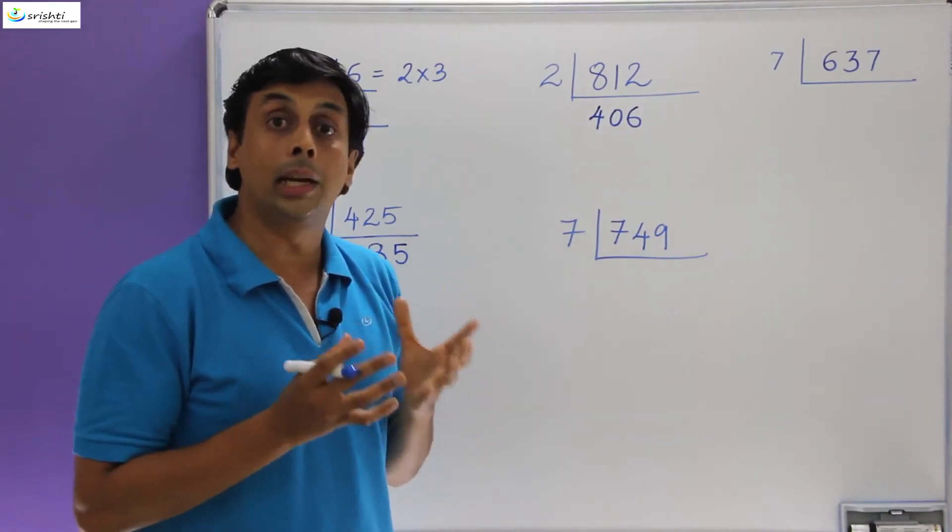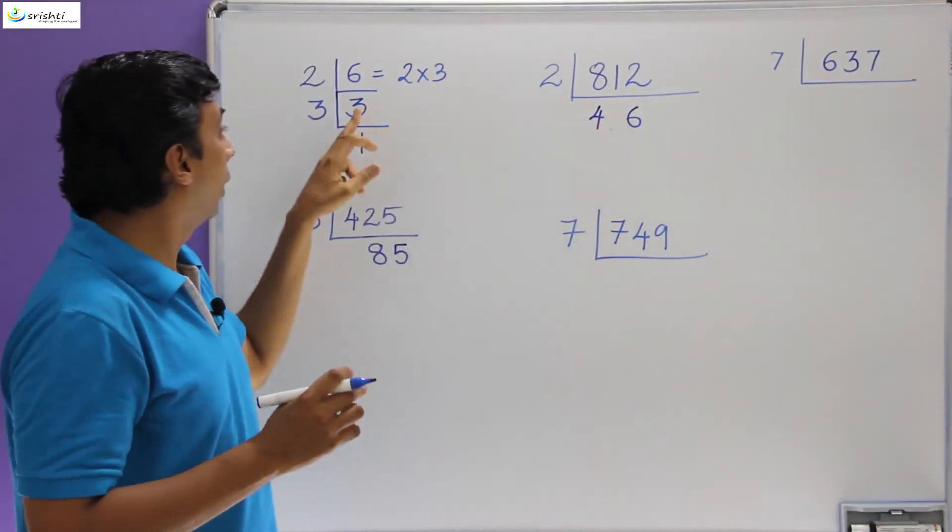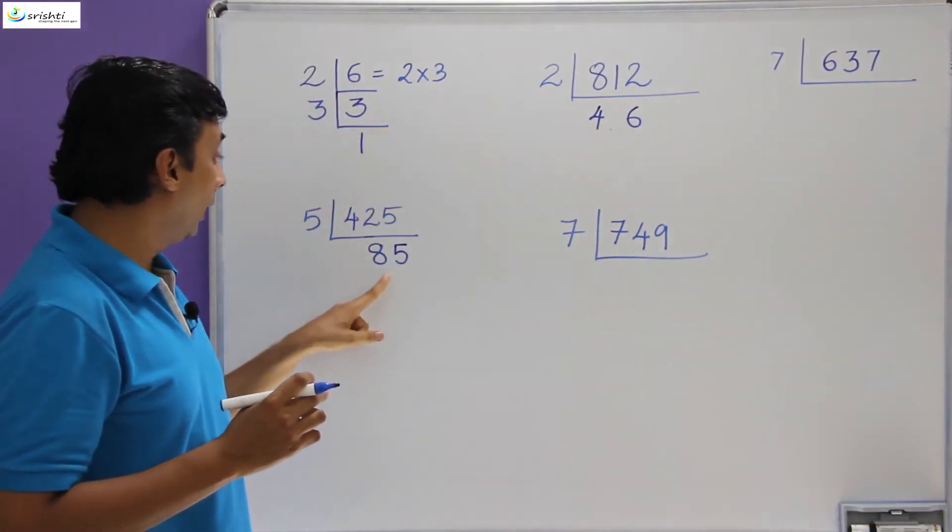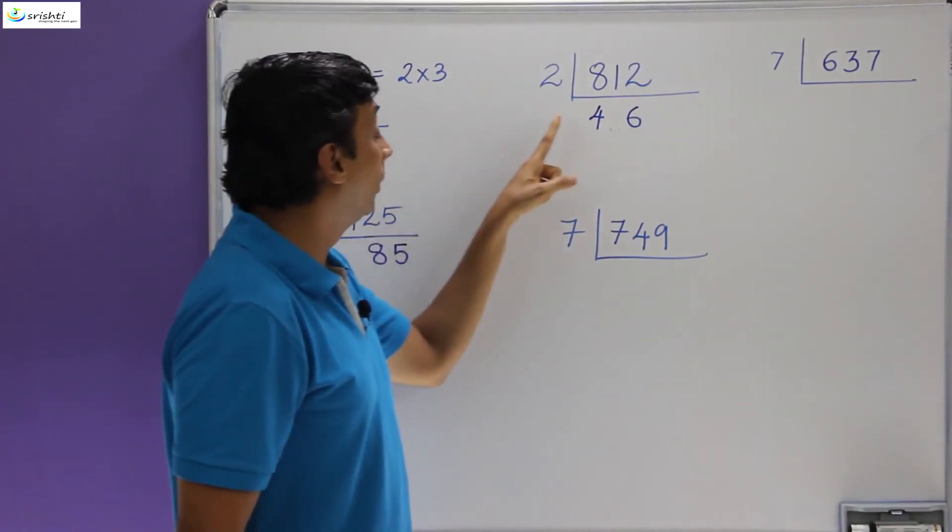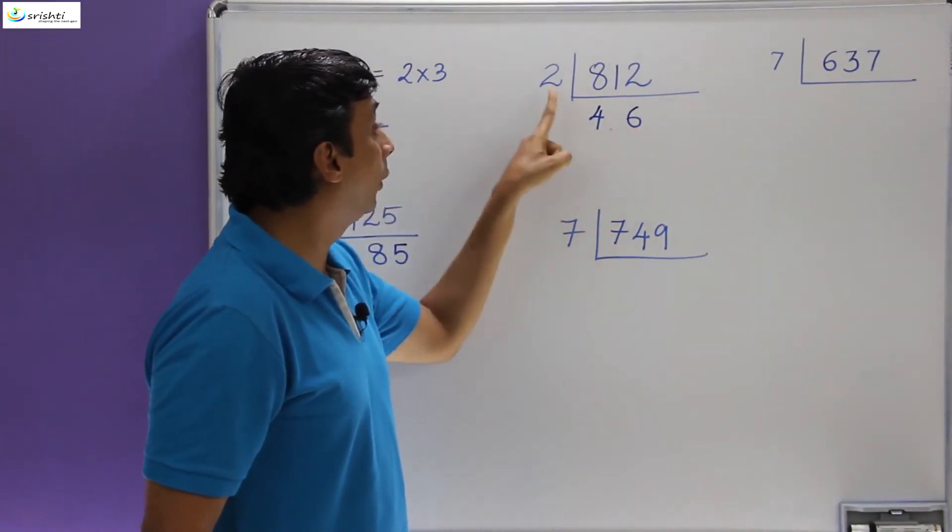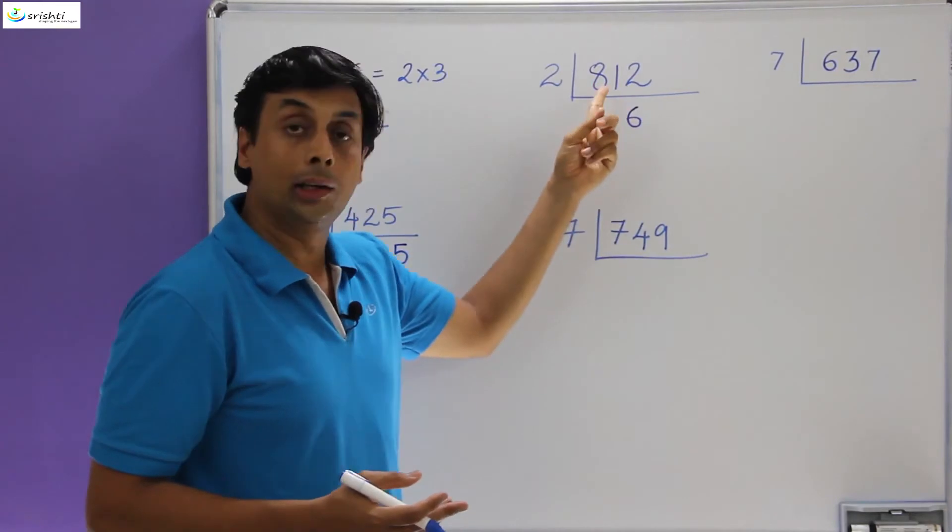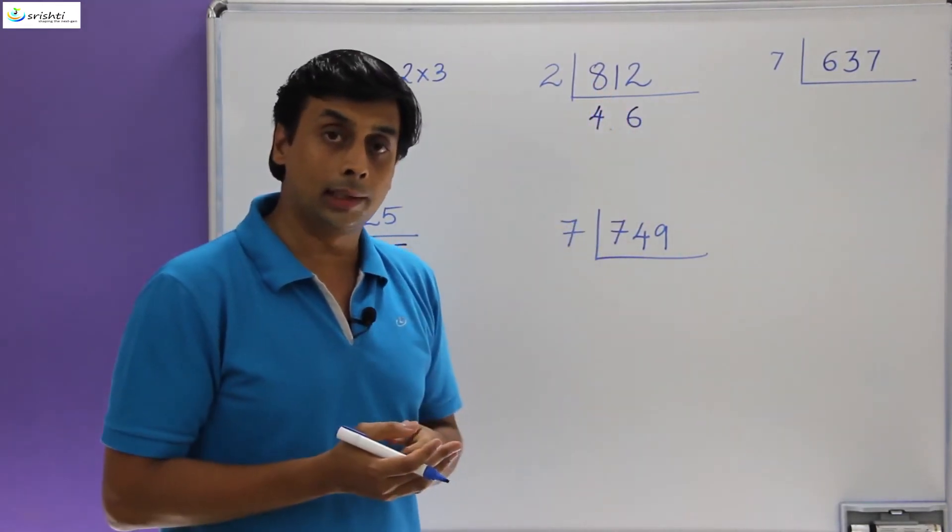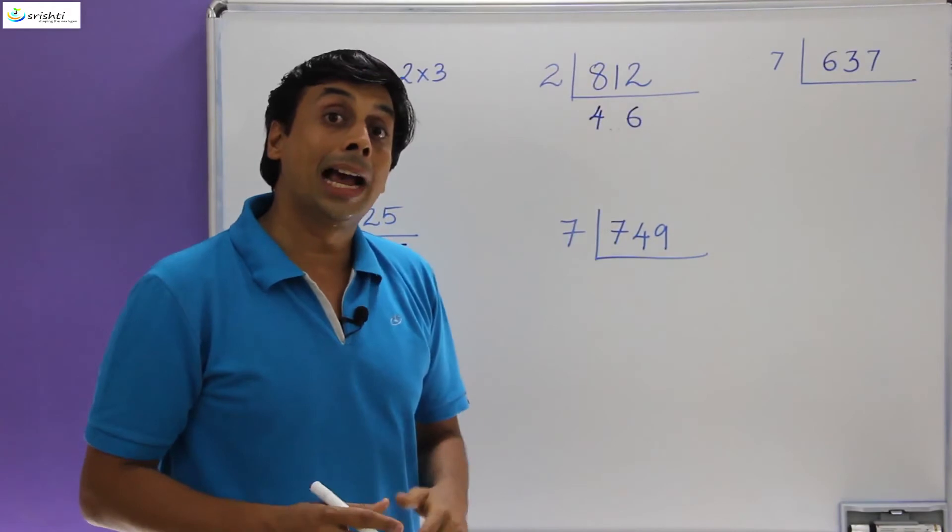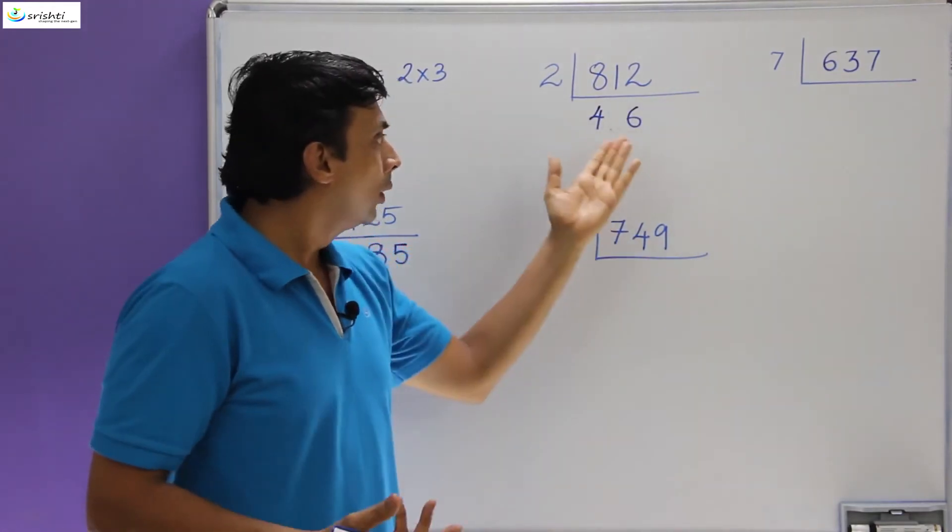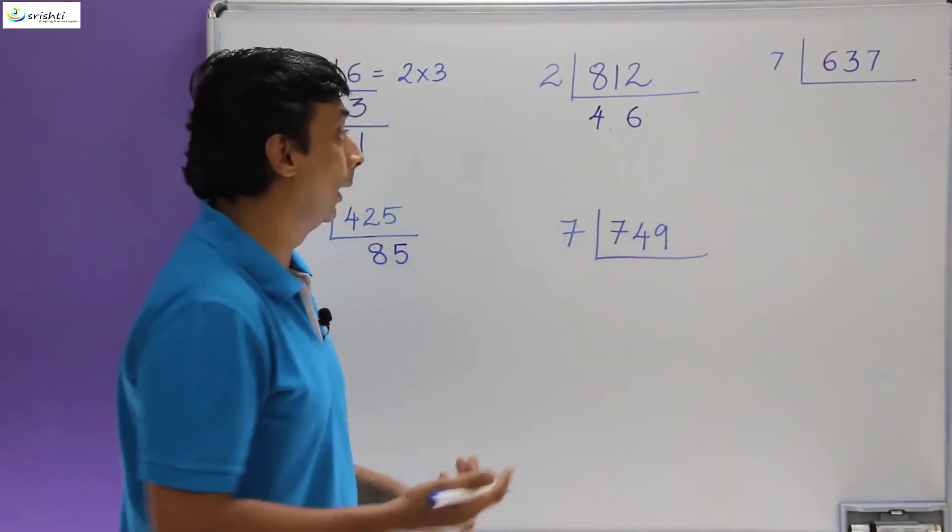Now you have to be a bit intuitive over here. See, if your answer is 46, then if you notice over here, 3 twos are 6, 85 fives are 425. So when you multiply this number with 5, you got 425. Similarly over here, if you multiply 46 with 2, you should check if you are getting 812. 46 twos are 92, definitely not 812. Another way to look at it is 800 divided by 2 is 400, so obviously 812 divided by 2 has to be a number greater than 400. So how can it be 46? It definitely cannot be 46. So that is the intuitive way of catching your mistake. So the right answer is 406.